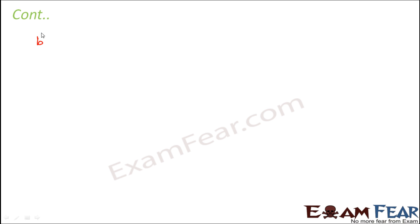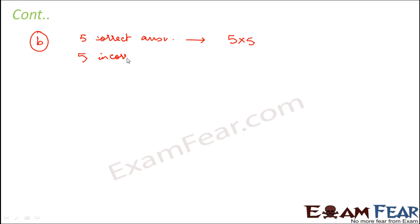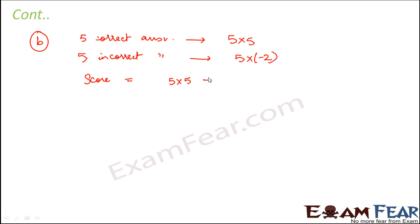In the second part, Reshma gives 5 correct and 5 incorrect answers. For 5 correct answers the score is 5 into 5, and for 5 incorrect answers the score is 5 into minus 2. Therefore the total score of Reshma is 25 minus 10, which is equal to 15.